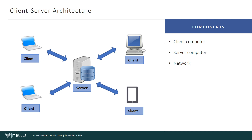In client-server relationships, both the client and server carry out some data processing tasks at their end. The client-server architecture consists of three main components: the client computer, the server computer, and the network. I hope you watched the previous lesson about the OSI model, where we reviewed in detail the different layers of communication between devices in the network.